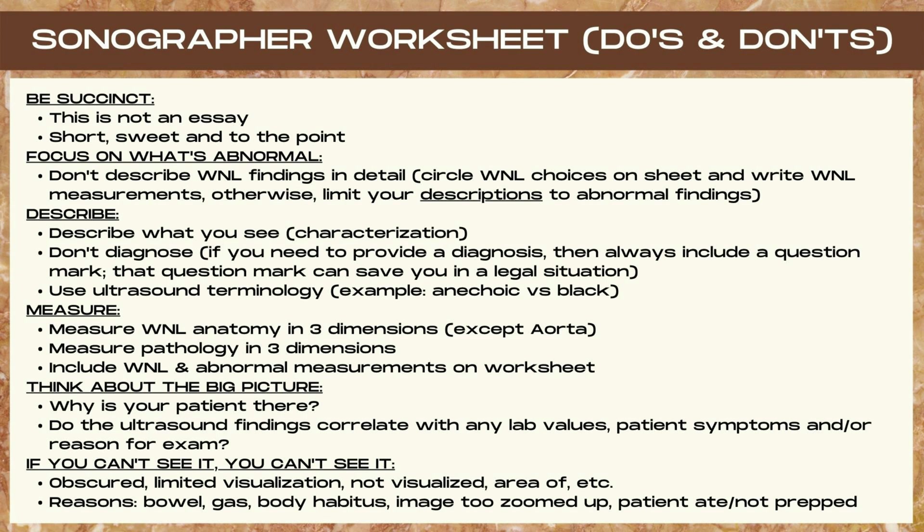On the sonographer worksheet, ensure you have completed all measurements. Measure all normal anatomy in three dimensions — length, height, and width. The exception is the aorta, where length is only measured if an aneurysm is visualized. Measure all pathology visualized in three dimensions as well, and ensure that both normal and abnormal measurements are included on your worksheet.